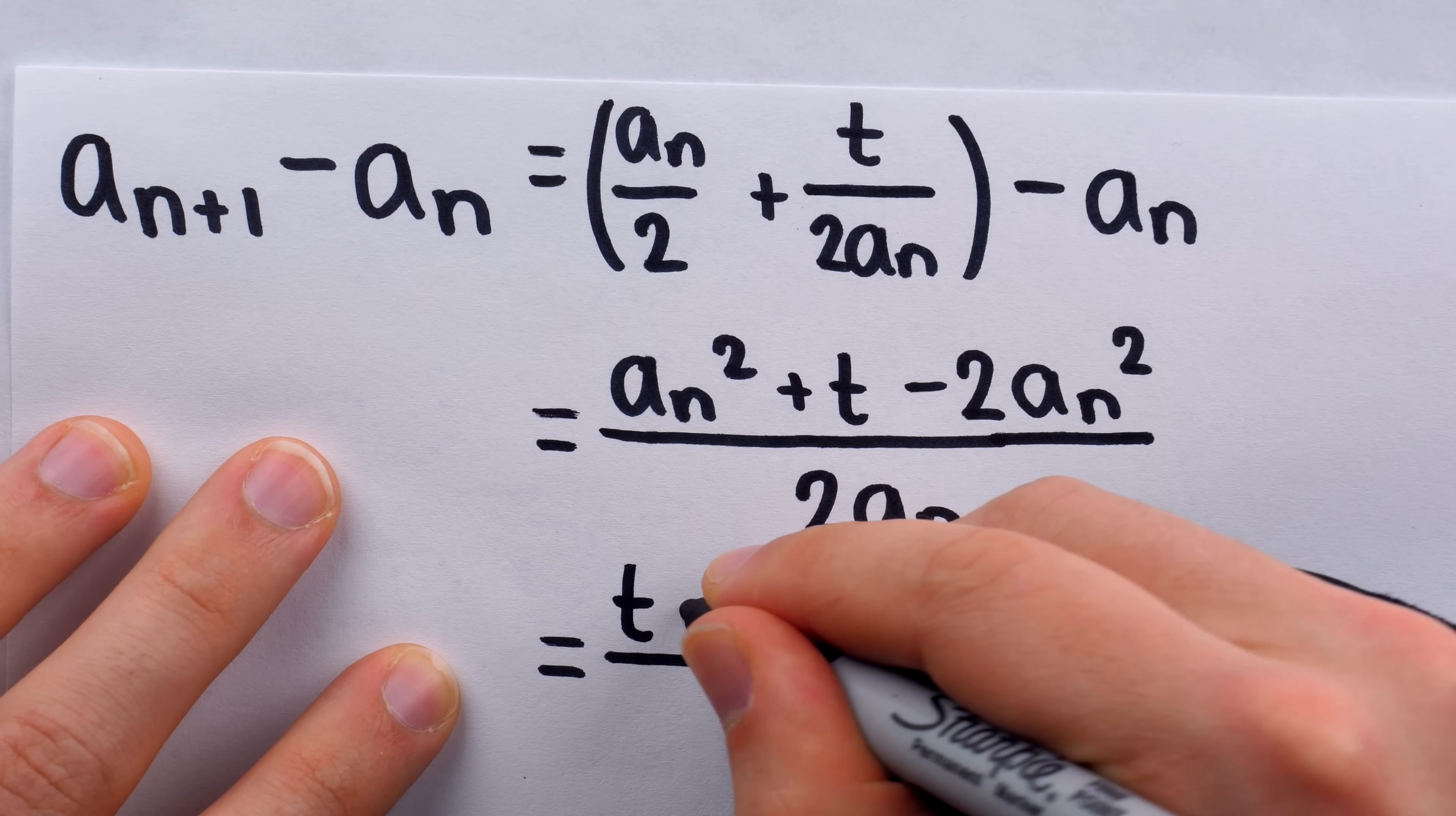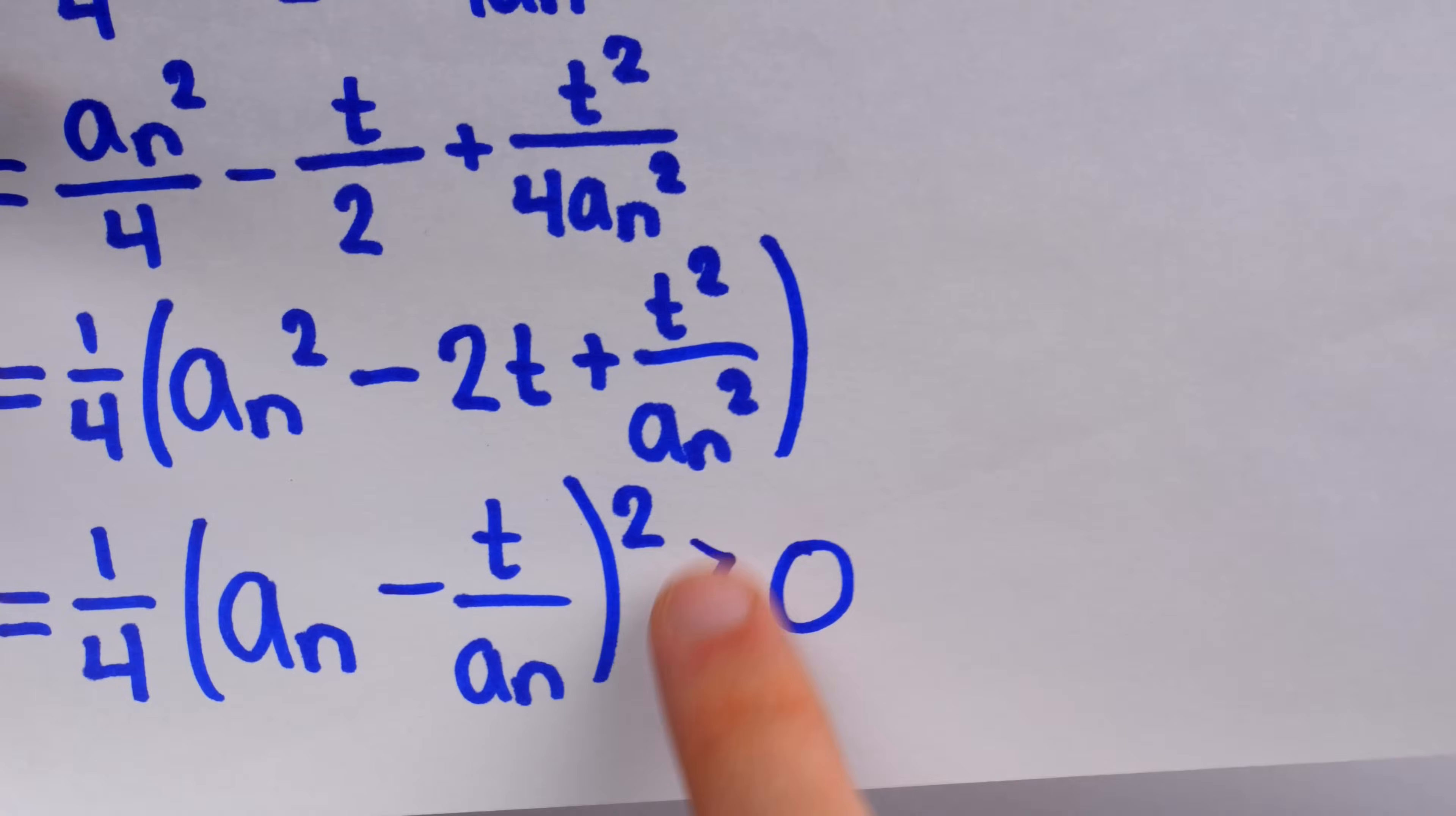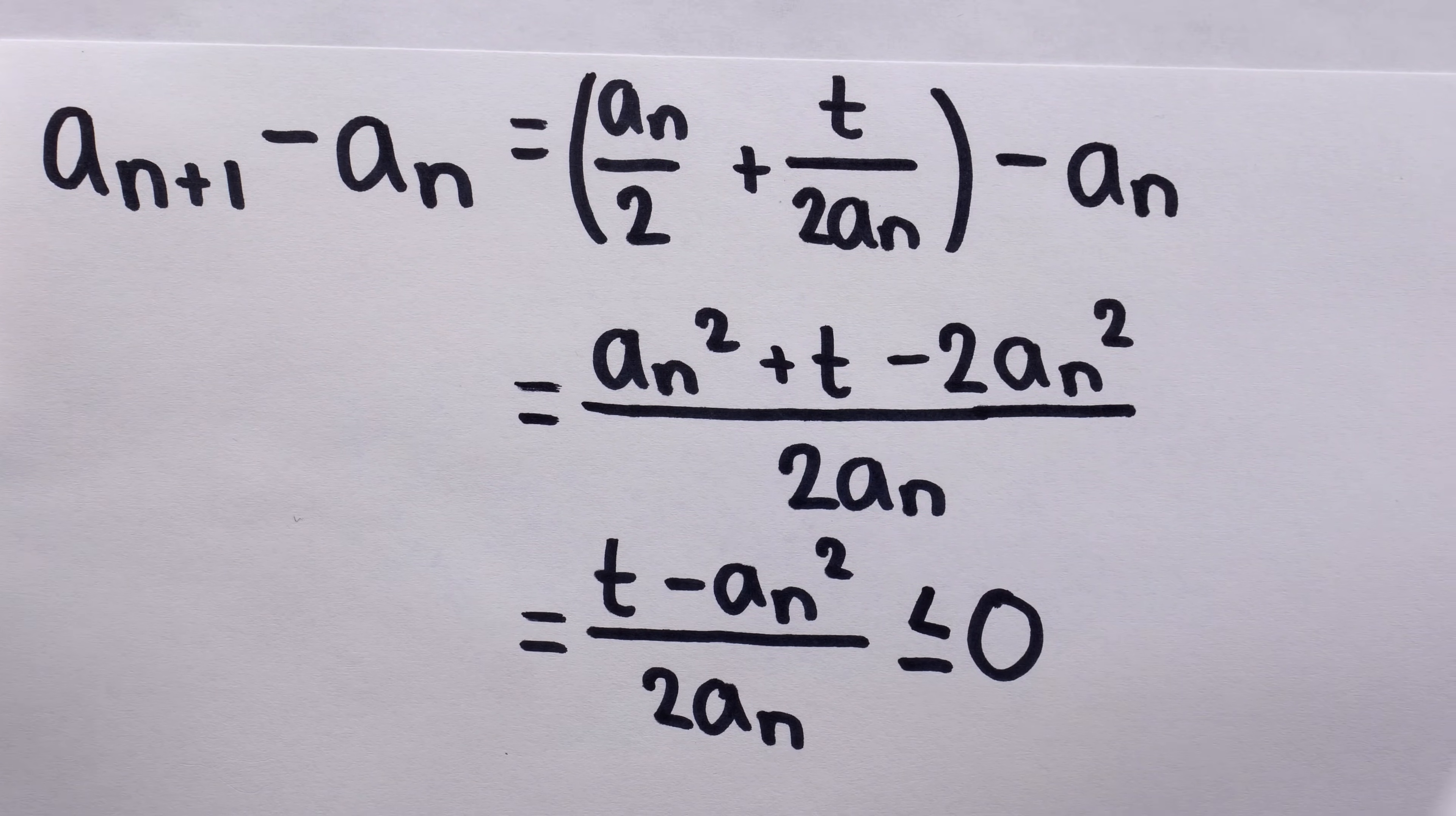Thus, we can rewrite as t minus a n squared all over 2 a n. Now, 2 a n is positive because the terms of our sequence are positive. And remember, back in the previous step, we showed that a n plus 1 squared minus t is greater than or equal to 0. That means if we flip this, t minus a n plus 1 squared, like we essentially have here, this must be less than or equal to 0.